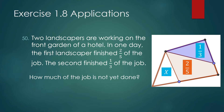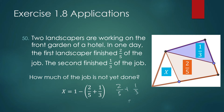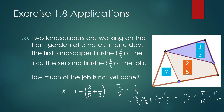The part of the job that is not yet done is x. The value of x is equal to one whole minus the sum of two-fifths and one-third. We will take away two-fifths and one-third from one whole — that is the part of the job not yet done. The part of the job done in the first day is 11 over 15.